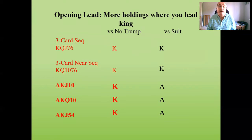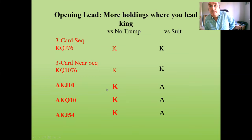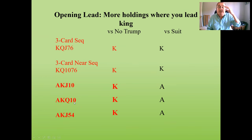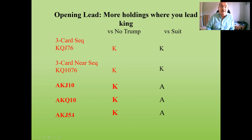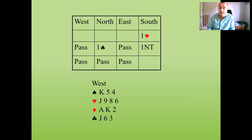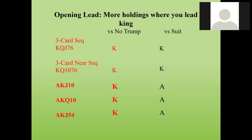We can now add extra holdings where it makes sense to lead the king against no trump. In addition to the first two holdings, holdings like ace-king-jack-ten, ace-king-queen-ten are situations where we want to find out who has the honor. Even ace-king-jack-five-four — ideally with at least five cards to avoid losing a trick — you lead the king hoping to find out who's got the queen.